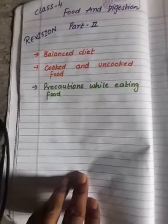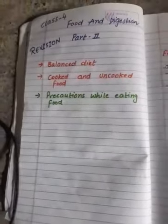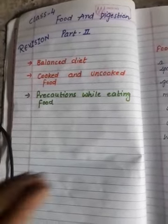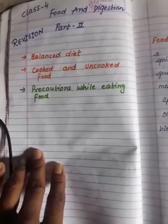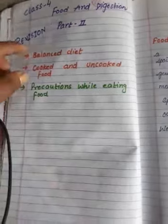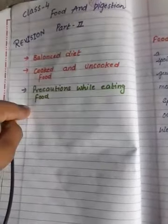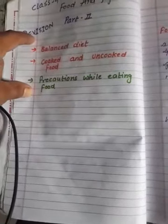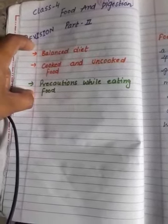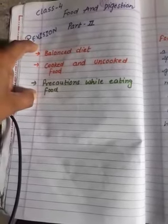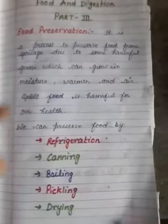Good evening everyone, welcome back. I am Pramila and today we will discuss chapter Food and Digestion, Part Three. Before starting Part Three, I want to revise Part Two. The topics we covered in Part Two were: first, balanced diet; second, cooked and uncooked food; third, precautions while eating food. If you have forgotten any of these topics, you can pause this video and learn them again.